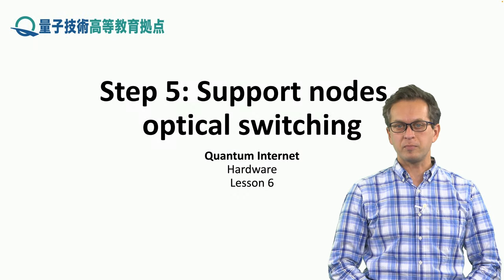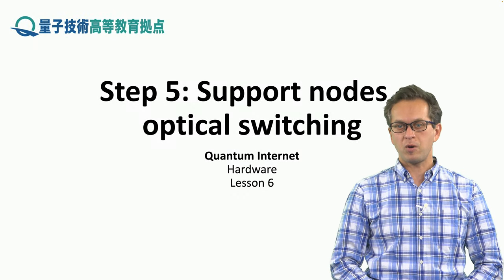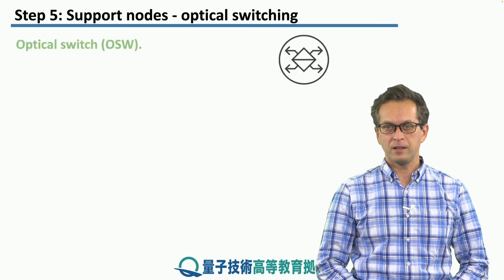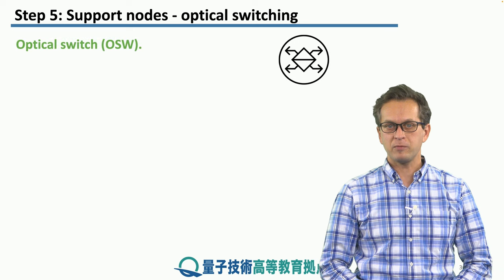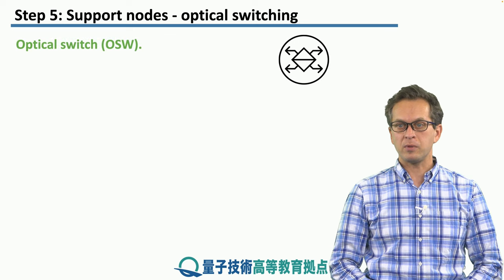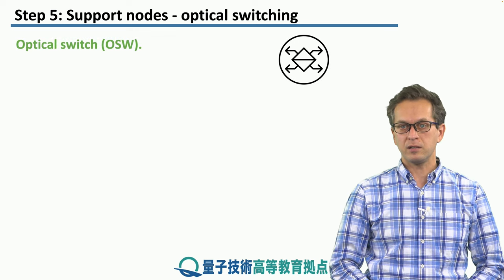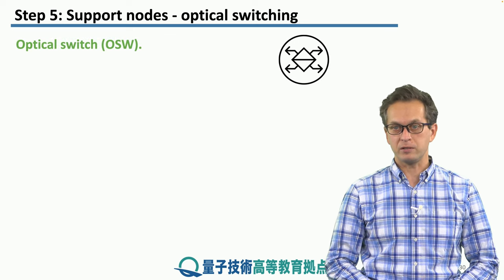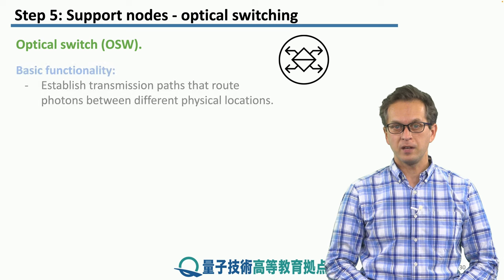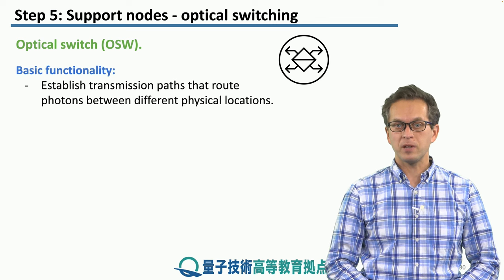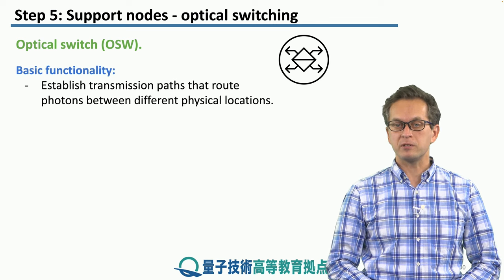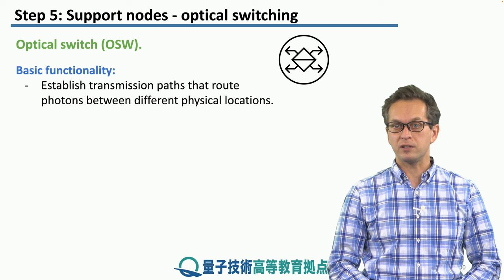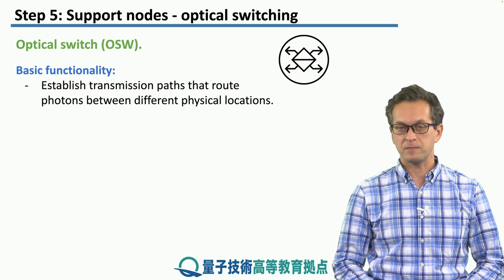Step 5: Support node — optical switching. In this last step we're going to talk about a single support node and that's the optical switch. Its job is to establish transmission paths that route photons between different physical locations.